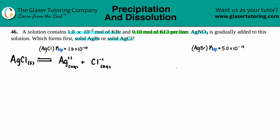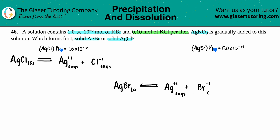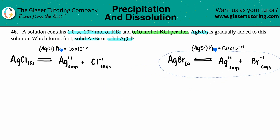Now let's do AgBr — it's the same thing. AgBr (solid) yields Ag⁺ and Br⁻. Bromine is in the same group as chlorine so it's also a negative one charge, both aqueous because of the charges, and the equation is balanced.